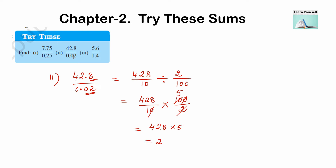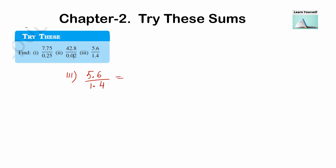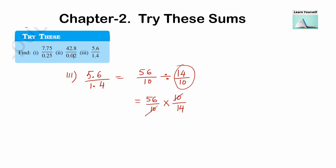So the answer for the second numerical is 2140. The third numerical is 5.6 divided by 1.4. Converting into fraction form and then to multiplication: 56 divided by 10, multiplied by the reciprocal of the second fraction, which is 10 divided by 14. The 10s cancel out, and 14 into 4 is 56, so the answer here is 4.